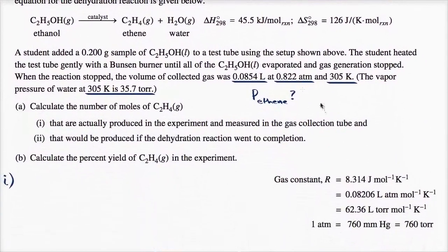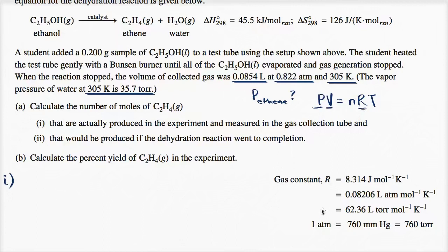As a reminder, the ideal gas law states: pressure times volume equals the number of moles times the gas constant times the temperature. If we're talking about one gas component, we use its partial pressure. We have the volume, the gas constant, and the temperature of 305 Kelvin. These constants are provided at the front of the AP exam, so you don't need to memorize them. The gas constant R is available in different units depending on which we want to use.